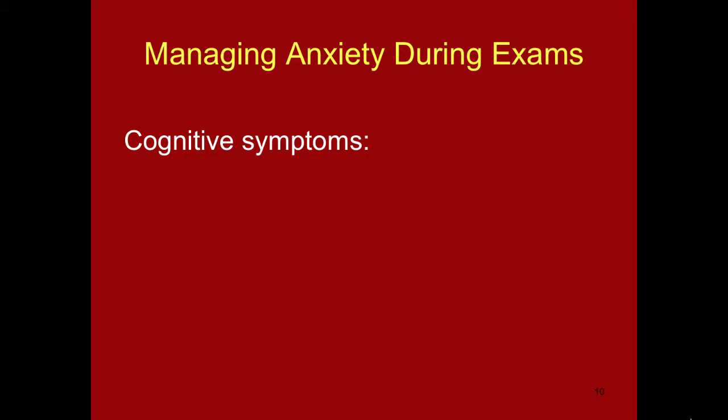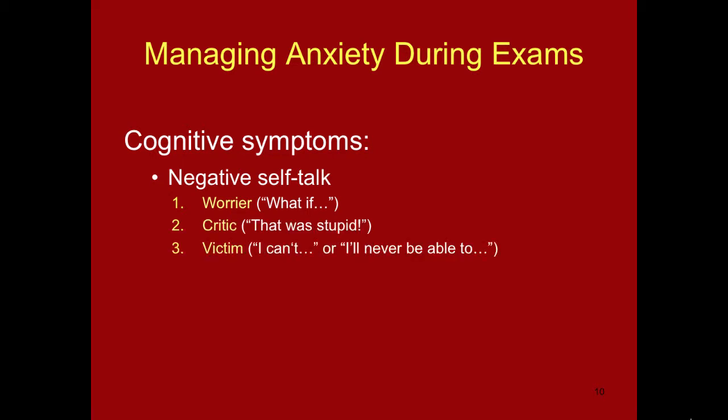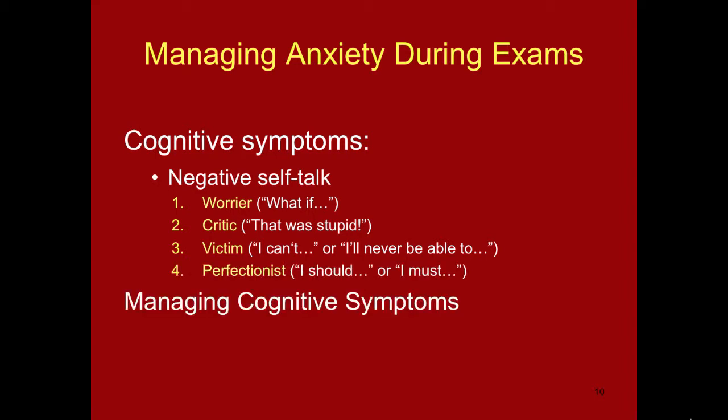Coupled with the physiological symptoms caused by emotionality are the cognitive symptoms of worry that we experience with anxiety. One of the more prevalent cognitive symptoms we engage in is negative self-talk. The most common types are that of the worrier, critic, victim, and perfectionist. Think back to our unit on the regulation of emotions and recall that the irrational beliefs we engage in during negative self-talk are largely automated and subconscious. For this reason, it is important to listen and become aware of these irrational beliefs so they can be addressed and disputed.